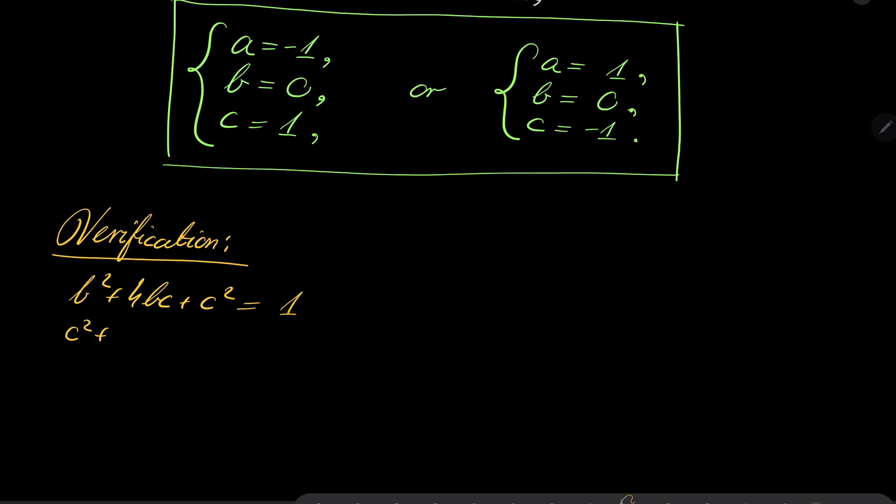c² + 4ca + a². Well, c² is 1. Plus 4ca. Notice that in both cases, -1 times 1 or 1 times -1 is -1. So we have + 4(-1). Plus 1, it is -2. And finally,